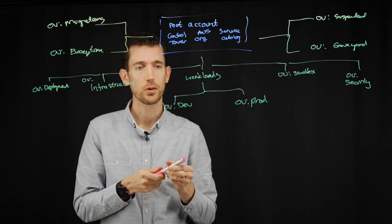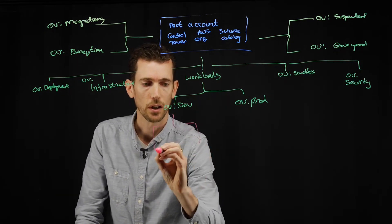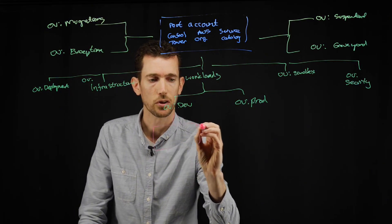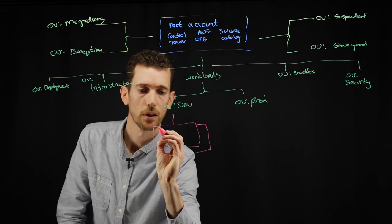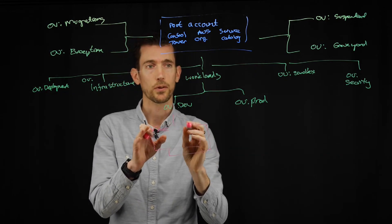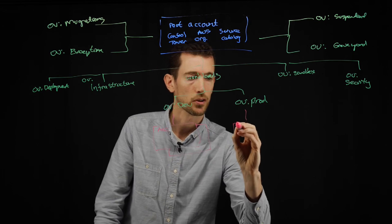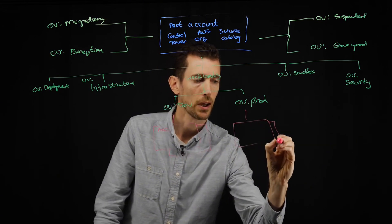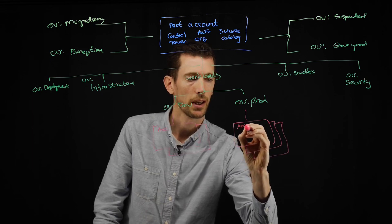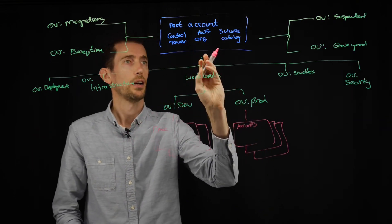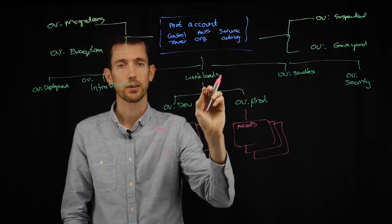Below these organizational units, you would have accounts. So for example, if we look at the dev environment, you would have multiple accounts here. So for each of your different workloads. And the same with production. You would have multiple accounts. And as I mentioned earlier, those could be automatically vended by your service catalog.